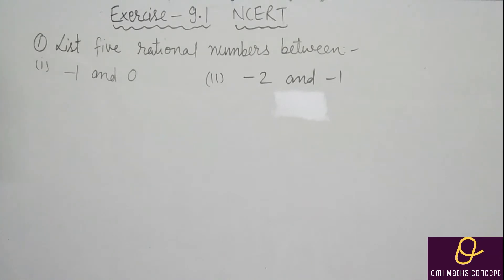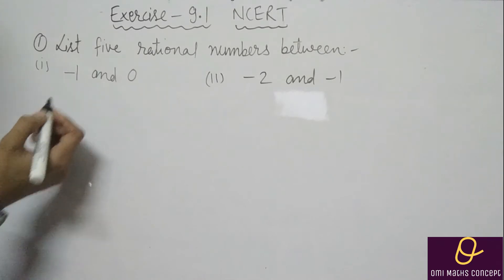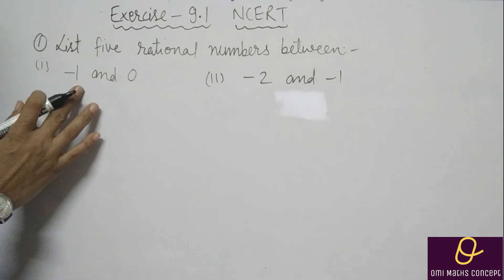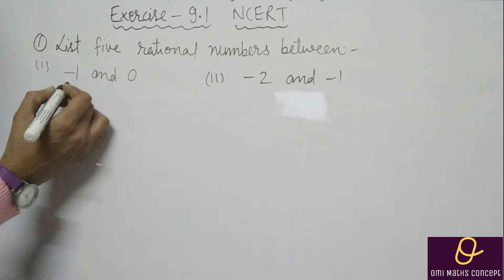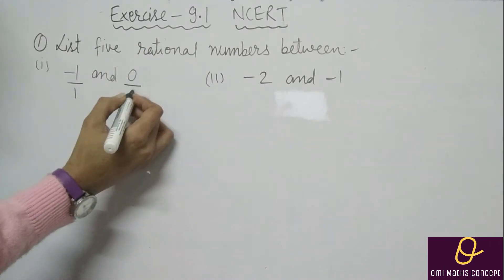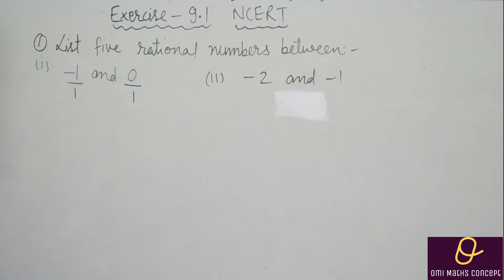So first, dekhe: list five rational numbers between minus one and zero. Aapko five rational numbers find out karne hain minus one aur zero ke beech mein. In dono mein denominator nahin hai, lekin isko numerator aur denominator ki form mein lana hoga. By one by one — ho gaya ye numerator aur denominator ki form mein.